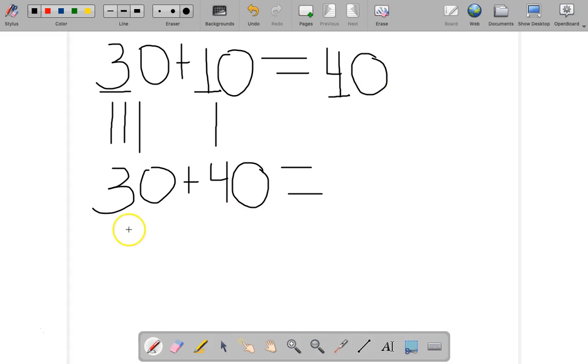Let's look at another problem. This one is 30 plus 40. I'm going to try it first with the place value model. I have 30, or 3 tens, which makes 30. 1 ten is 10, 2 tens is 20, 3 tens is 30.